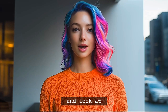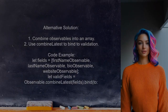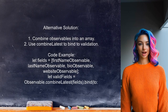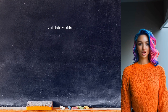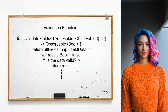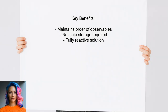Another approach involves handling data validation with a single subscription. It combines the observables for first name, last name, bio, and website into an array and uses combine latest to bind the results to a validation observable. A function validates the fields by taking an observable of all fields and mapping the data to check if it's valid. The validation result updates reactively whenever new data is received. This solution maintains the order of the source observables and avoids storing state, making it completely reactive.